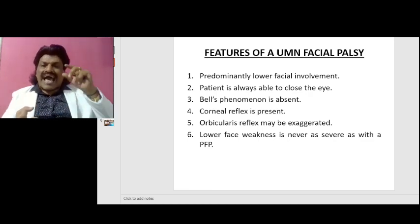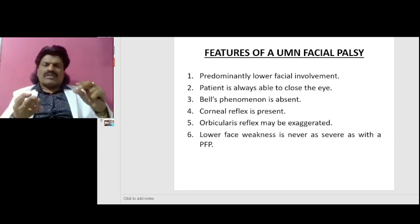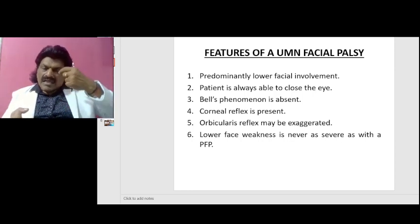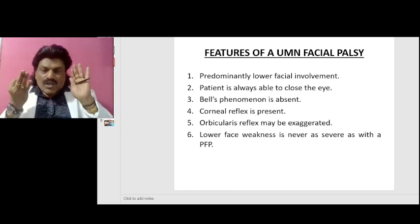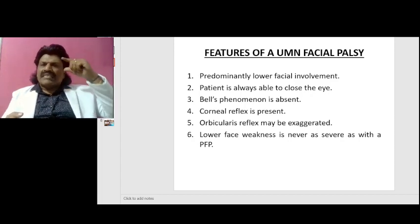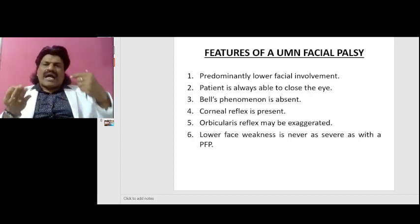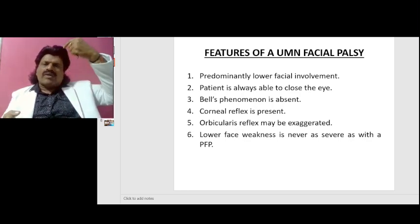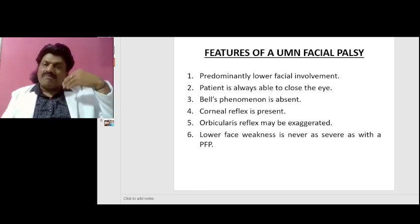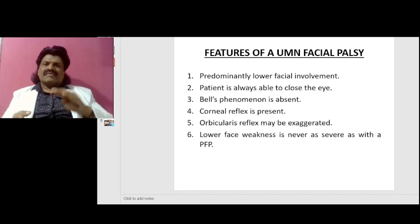Bell's phenomenon is absent. Bell's phenomenon is a normal phenomenon which is well seen in a person with a lower motor neuron facial palsy. When we ask a person to close the eyelids, the eyeball moves upwards — it is a normal phenomenon. But in a person with LMN facial palsy, since they cannot close the eyelid, when they attempt to, we can see the eyeball moving upwards. Since it is a UMN facial palsy, Bell's phenomenon is not well seen.